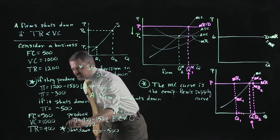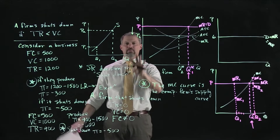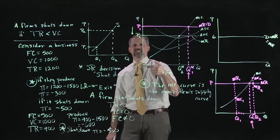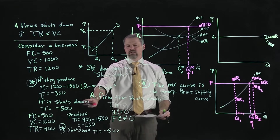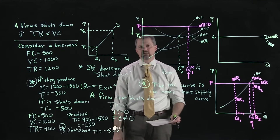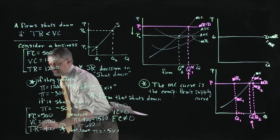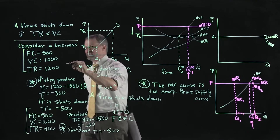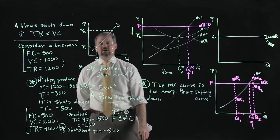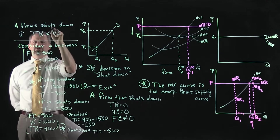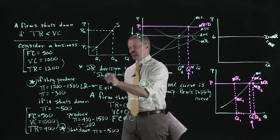Notice: in one situation they produce; in the other they shut down. In every scenario, profit is negative. But when profit is negative, maximizing profit means losing the smallest amount possible. What's different between the two cases? In the first, revenue ($1,200) is bigger than variable cost ($1,000). In the second, revenue ($900) is smaller than variable cost ($1,000). A firm shuts down if its revenue is less than its variable cost — not if profit is negative, but specifically if revenue is less than variable cost.